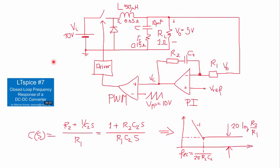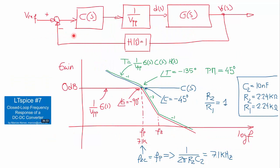Just a quick review of what we are going to do. In the previous video LTSpice number 7, we presented our DC-DC converter — a buck converter operating in closed loop. We are measuring the output voltage, we have here our PI compensator, and this is the comparator to generate the PWM signal for the switch by comparing the output of the compensator with a ramp of 10 volts peak to peak. This is the expression of the compensator.